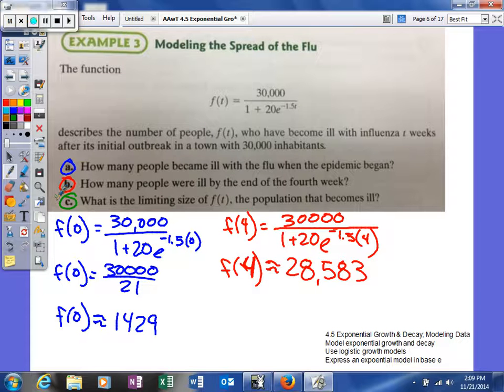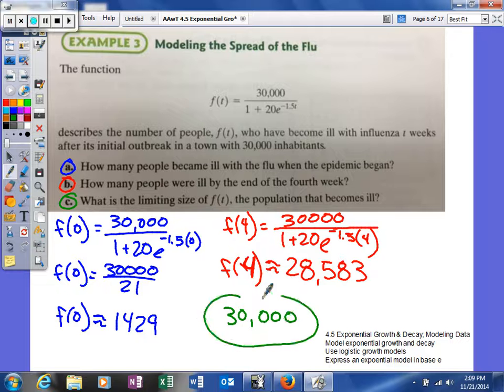The limiting size for our group is actually going to be the 30,000 inhabitants. Obviously, if you only have 30,000 people in a city, you're not going to have more than 30,000 people get the flu. You're limited by the population of the city. As you can see in your problem, that turns out to be the numerator. In many logistic growth problems, the numerator will represent your limiting amount.